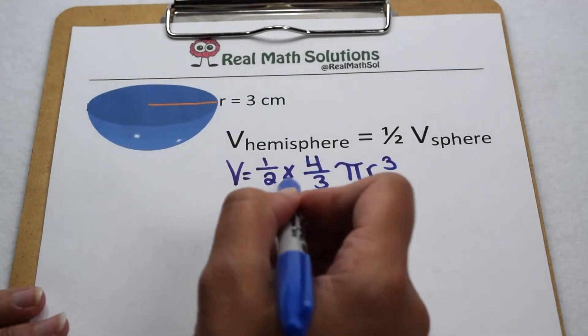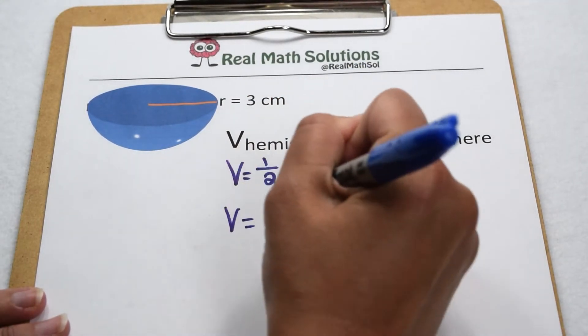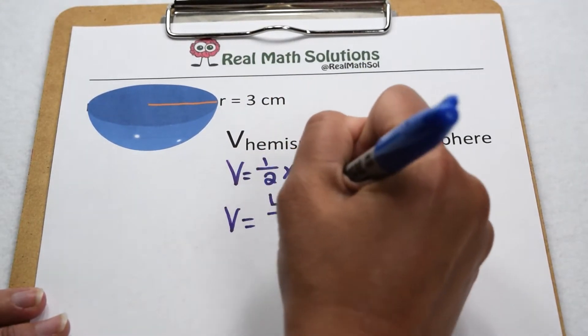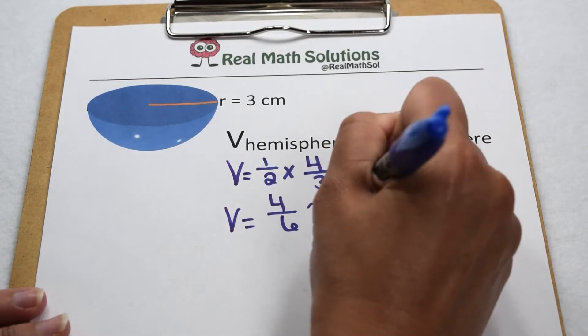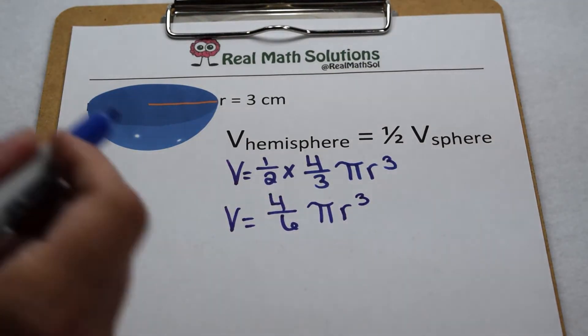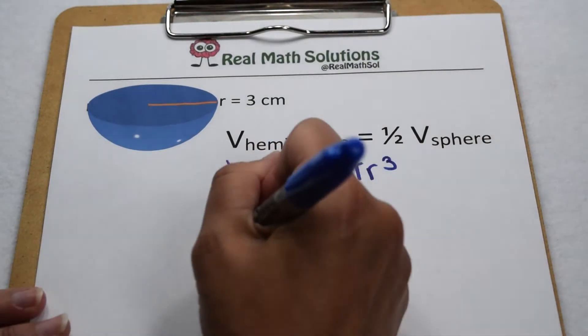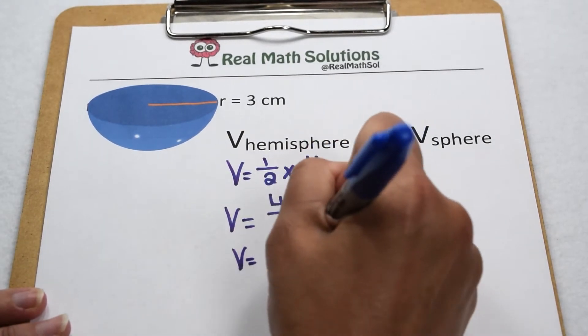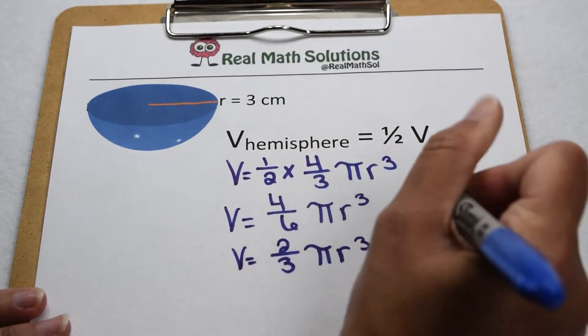Right away we see we can multiply together our fractions. One-half times four-thirds is going to give me four-sixths, so we have four-sixths pi radius cubed. Four-sixths is not in lowest terms, so we can simplify that to two-thirds. That gives us two-thirds pi radius cubed.